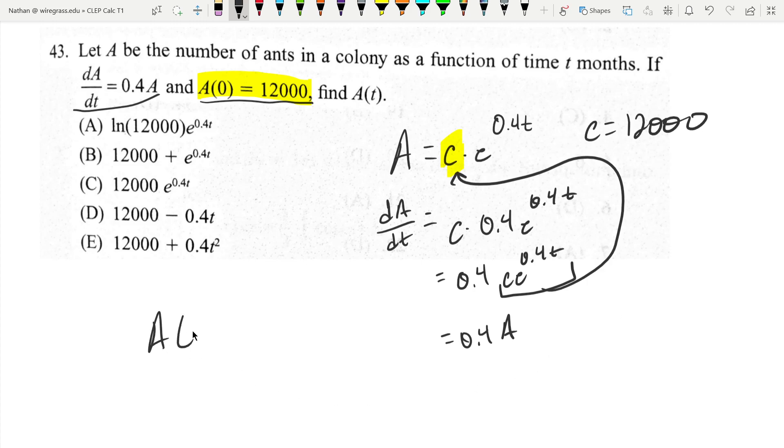So our function A of t, it's going to equal c, 12,000 times e to the 0.4 t. And that is c.